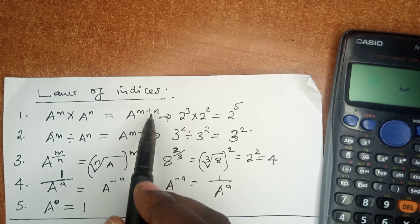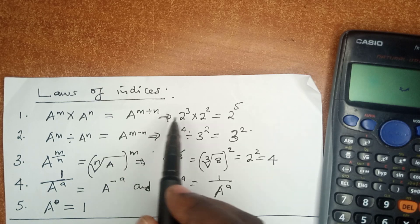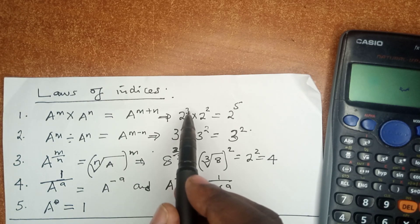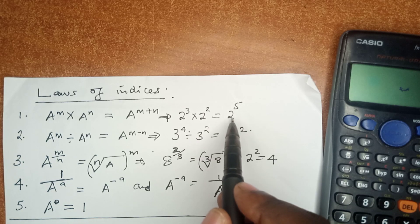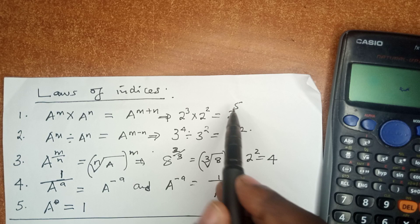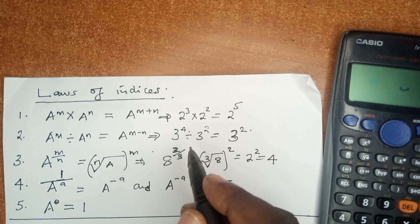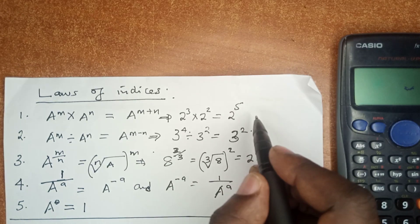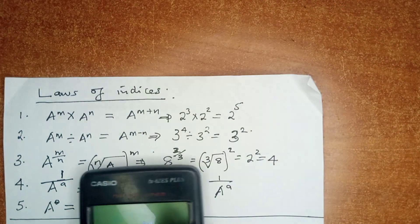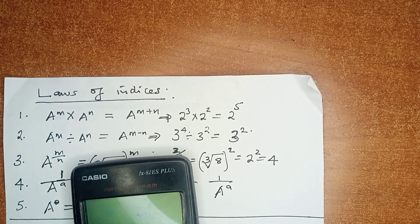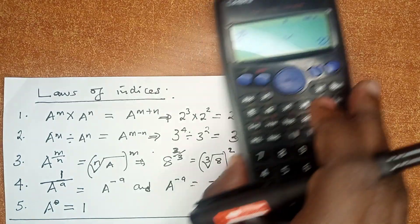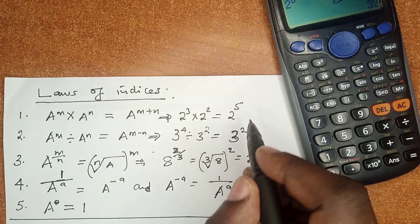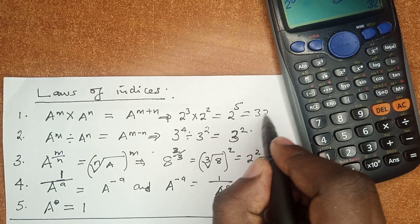For example, if 2 raised to power 3 times 2 raised to power 2 is 2 raised to power 3 plus 2 which is 5, and you can consult your calculator and it will tell you this is 2 raised to power 5. This is 32.